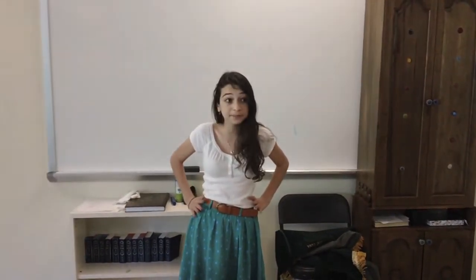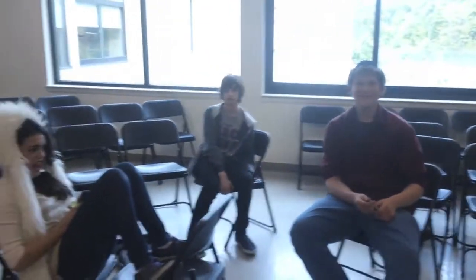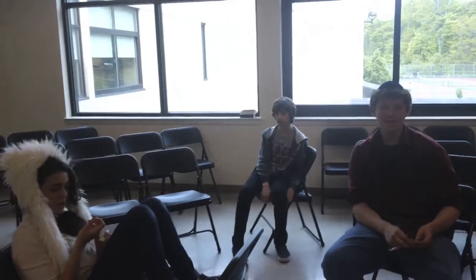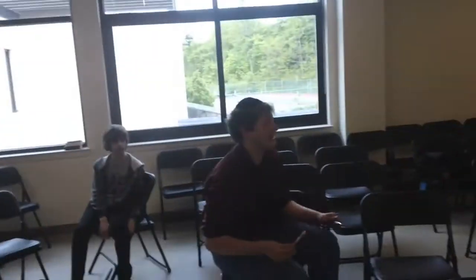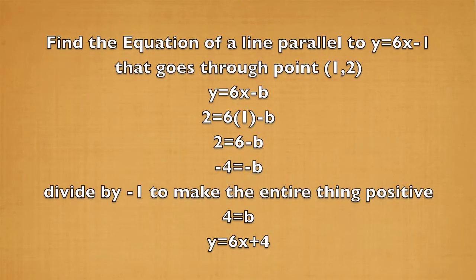Now that we've learned about parallel and perpendicular lines and how to find them, who knows what happens when a parallel or perpendicular line has to go through a certain point on a graph? Anyone? Clearly nobody knows, so I'll teach you. Let's find the equation of a line parallel to y equals 6x minus 1 that goes through point (1, 2).